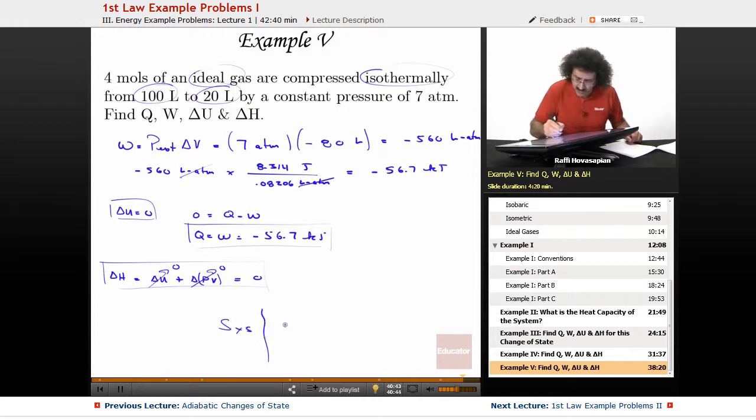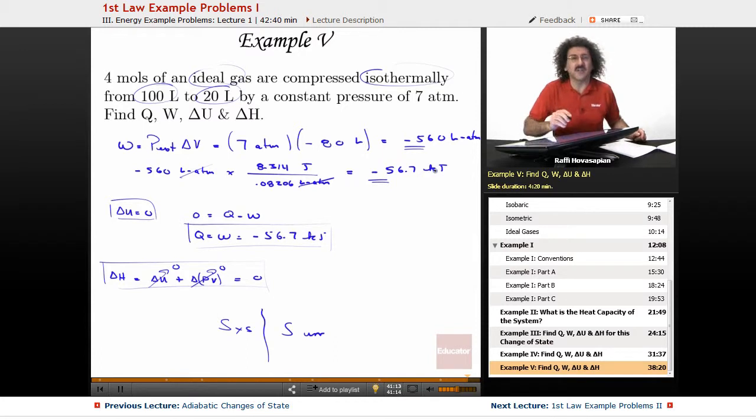And again, in this particular case, what's happening is this. Here's the system, here is the surroundings. Notice in this case that the work and the heat are negative. Work is negative. Sorry, here I am talking, I'm not writing properly. Minus 56.7. No, this is right. I have it in the next line. Minus 560 minus 56.7 kilojoules. Everything is good.